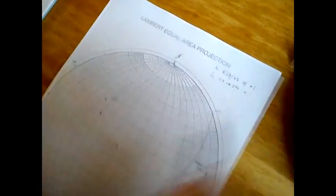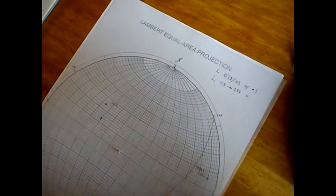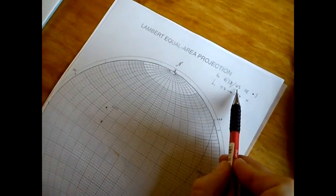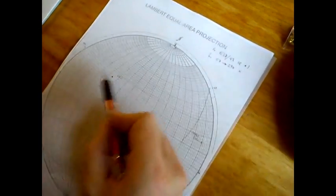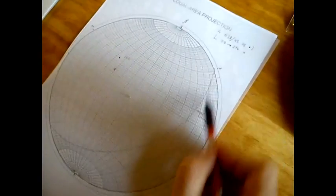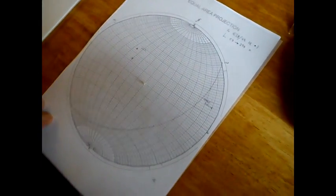And here we have lineation, plunge and azimuth, plotted. And a bedding reading, plotted as a pole and a great circle. So when you have lots of planar data, it's useful to plot them as poles, because it's quite straightforward. And this is the only way you can really plot linear data.